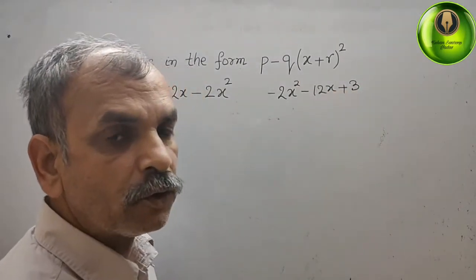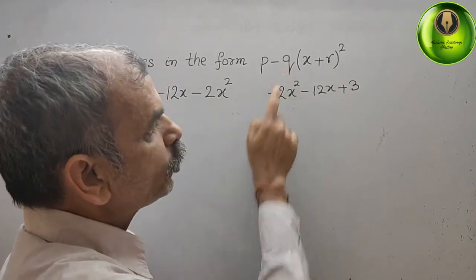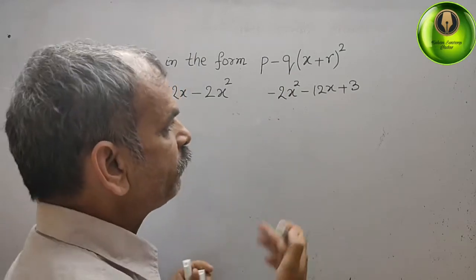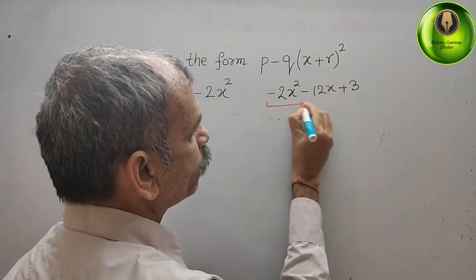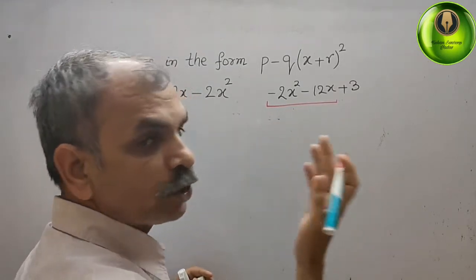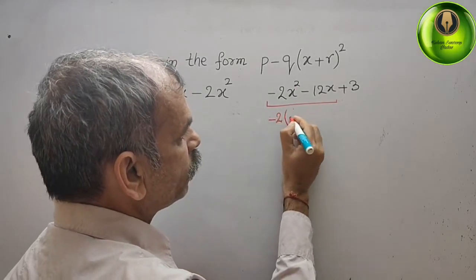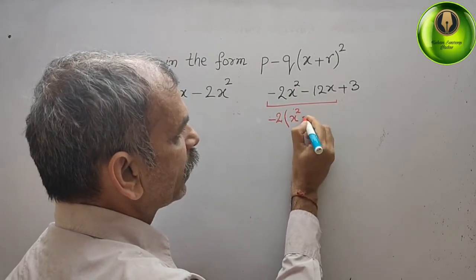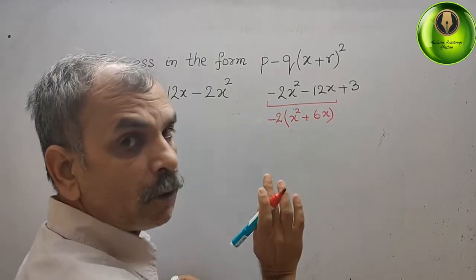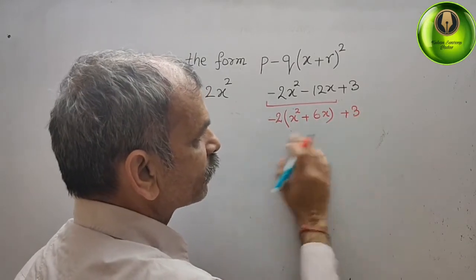Now what do we do next? We check here — they have given you q, that means something is common. So we look at just the first two terms. Minus 2 is common, so we factor out minus 2. Inside we get x square plus 6x. The remaining term plus 3 stays outside.